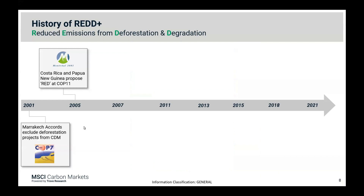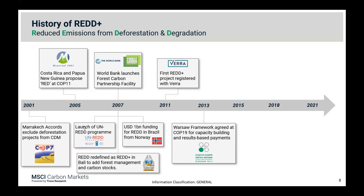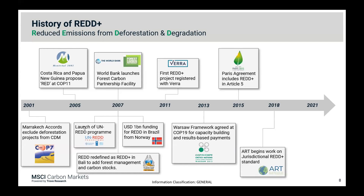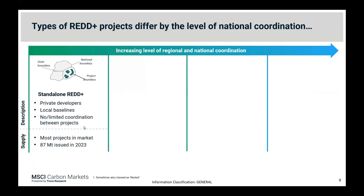REDD+ comes with quite a bit of history. Back in 2001, the Marrakesh Accords excluded deforestation projects from the CDM, and Costa Rica and Papua New Guinea proposed REDD at COP11. In 2007, the Forest Carbon Partnership Facility and the UN REDD program were introduced, along with a billion dollars in US funding from Norway for Brazil. In the 2010s, Verra registered their first REDD+ project, the Warsaw Framework increased support for result-based payments, the Paris Agreement included REDD+ in Article 5, and ART launched the jurisdictional REDD+ standard. The Glasgow Declaration on Forests followed, along with the LEAF Coalition's commitment to invest over 1.5 billion US dollars into J-REDD credits.